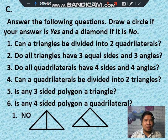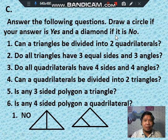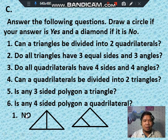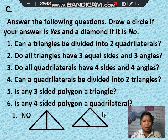Activity C: answer the following questions. Draw a circle if your answer is yes and a diamond if it is no. Question number 1: can a triangle be divided into 2 quadrilaterals? The answer is no. The illustration shows that if you divide a triangle into 2, the result is either 2 triangles, or a quadrilateral and a triangle — not 2 quadrilaterals.